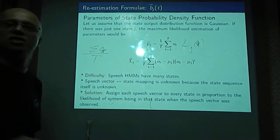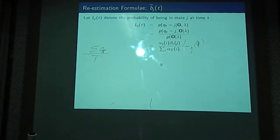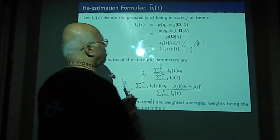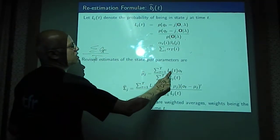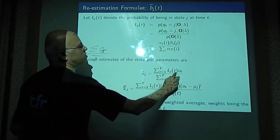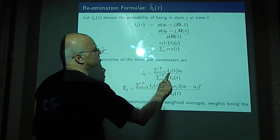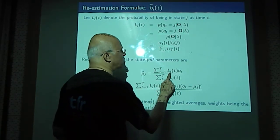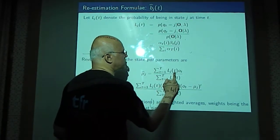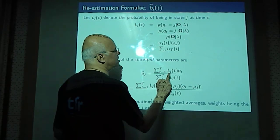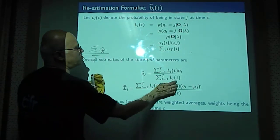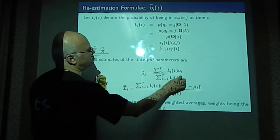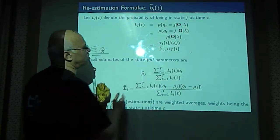And that is what the next slide shows. All that we do is, instead of taking the simple summation of O_t, we do a weighted summation of O_t, where weight is nothing but the likelihood of the t-th feature vector being emitted by the j-th state. So we take, and the denominator normalizing term, which is nothing but the sum of all the probabilities, all the likelihoods.